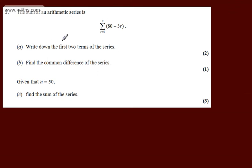In part a, we're asked to write down the first two terms of the series. The question carries two marks. So when r is equal to 1, we're going to have 80 minus 3 lots of 1. So 80 minus 3 lots of 1, that will give me 77.